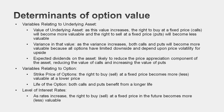There are two variables relating to the option itself. One is the exercise price — the right to buy something at a fixed price becomes more valuable at a lower fixed price. The other is the life of the option — the more time you have to play the option, the more valuable it becomes. There's only one macro variable: the level of interest rates. When interest rates are high, the present value of what you pay in the future drops, so call options become more valuable at higher interest rates and put options become less valuable.